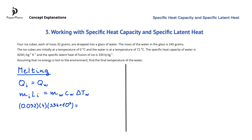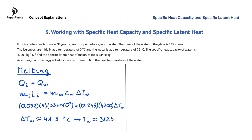This is equal to the mass of the water, 0.245 kilograms, times the specific heat capacity of water, 4200, times the unknown temperature change of the water. Rearranging for delta T_W and carrying out the calculations, we get approximately 41.5 degrees Celsius for the change in temperature of the water. This means that the temperature of the water originally in the glass, right after the ice has melted, is 72 degrees Celsius minus 41.5 degrees Celsius, which gives us approximately 30.5 degrees Celsius.